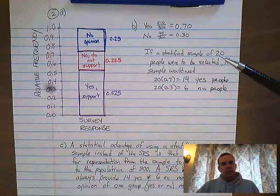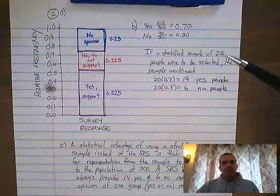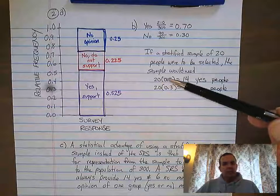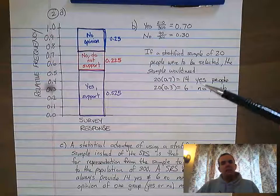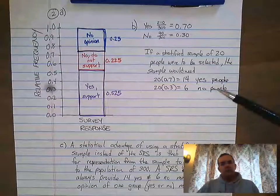So in this case, we had 20 people, and I would ask you, how many people did you want to have yes? So what I did is I took the 20 people, I multiplied it times the 70%, and I got 14. I would want 14 yes people, therefore I want six no people.